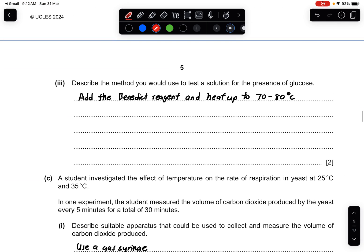Part 3: Describe the method you would use to test the solution for the presence of glucose. So two marks. Glucose is the test of a reducing sugar. So reducing sugar, we always use the Benedict reagent or the Benedict solution. Then we will heat up to 70 to 80 degrees. So adding the Benedict reagent is one mark. Heating it up is the second mark. Make sure you remember this.